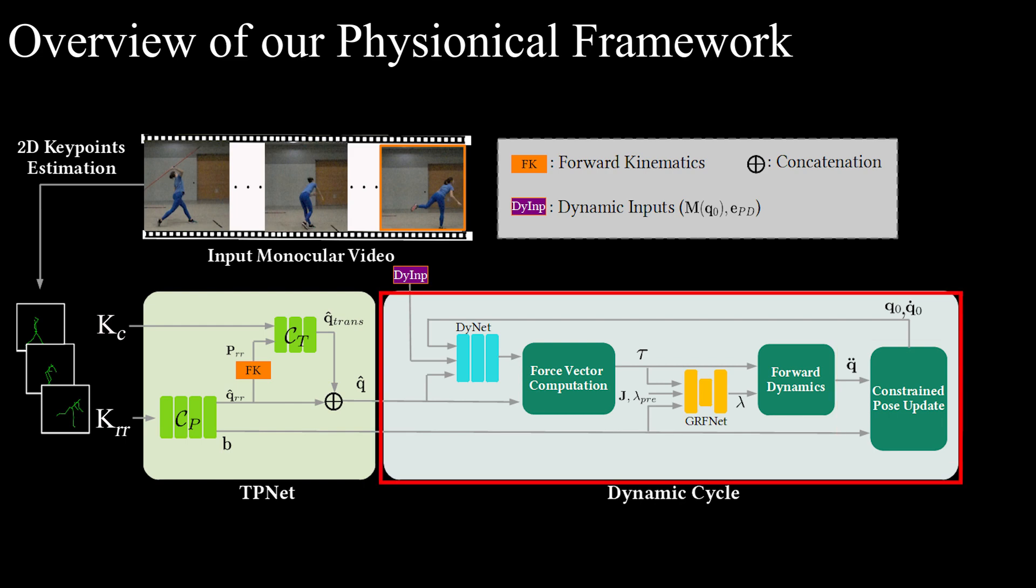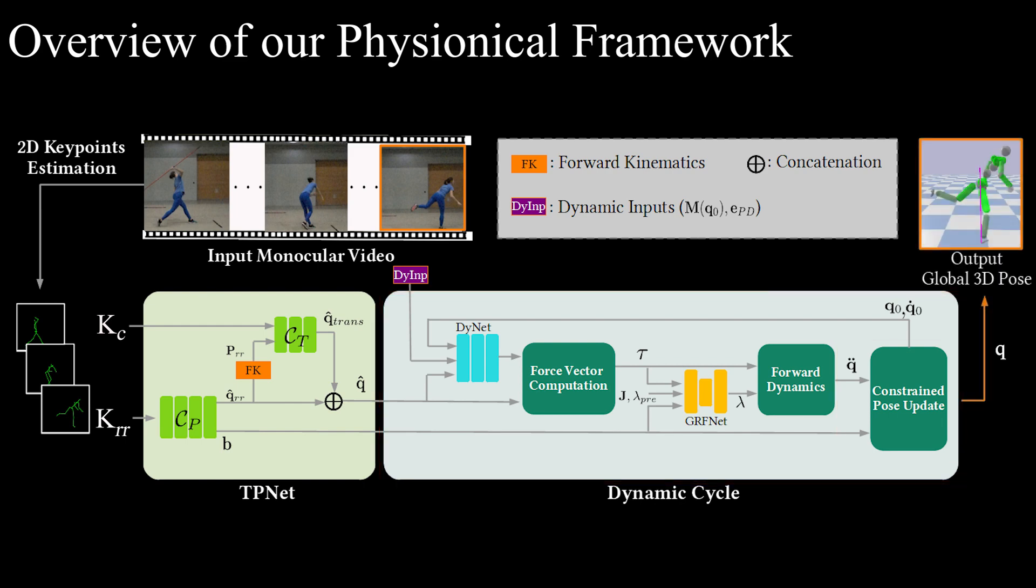The dynamic cycle is iterated multiple times. And afterwards, we obtain the final, physically plausible 3D pose. In contrast to existing physics-based methods, our physionical algorithm is fully learning-based. It learns the motion prior from the training data, relying on the explicit physics model.